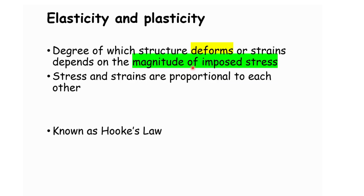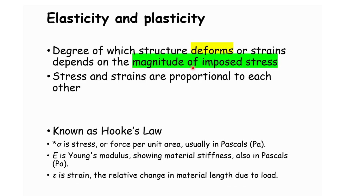Elasticity and plasticity are important material properties that define how materials react to external forces. They are widely used concepts in material science and engineering and can be applied across many industries. The equation sigma equals E times epsilon represents the linear relationship between stress and strain in a material under elastic deformation.